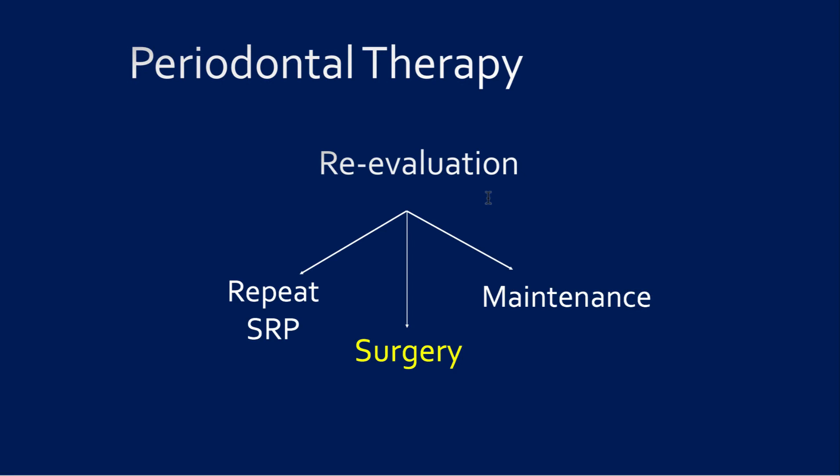Four to six weeks after completion of initial therapy we are at a point of reevaluation. This is a crossroad, because based upon our patient's home care and response to initial treatment, we may need to repeat the scaling and root planing. It is possible that you have stabilized the patient's periodontal condition, or maybe their health or hygiene doesn't support surgical therapy.